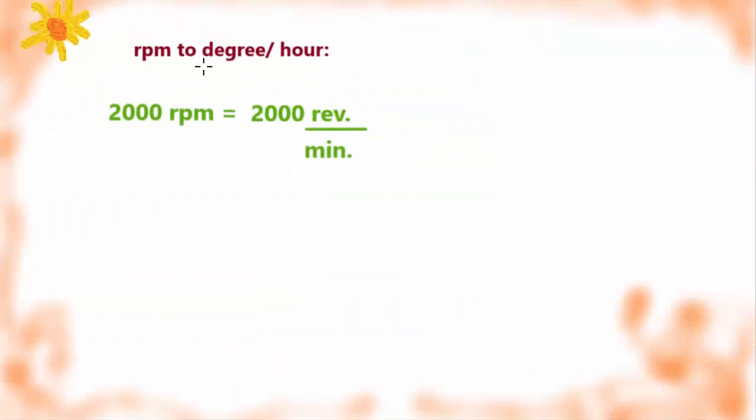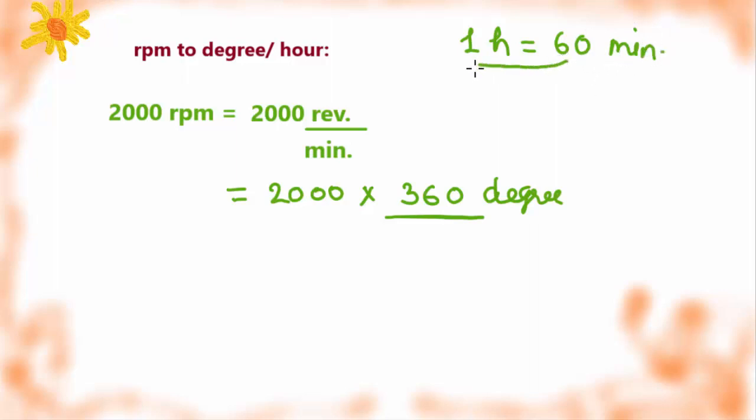Here we are going to convert RPM to degree per hour. We are given 2000 RPM or 2000 revolution per minute. Replace revolution into degrees. 1 revolution equals 360 degrees. 1 hour equals 60 minutes. We have to convert minutes into hours, so 1 over 60 would go here. 1 minute equals 1 over 60 hours. That we are going to plug in here.